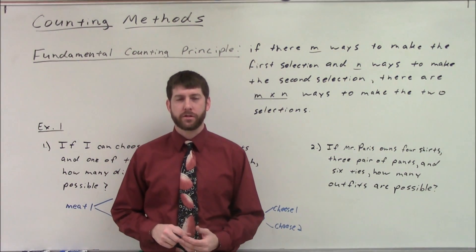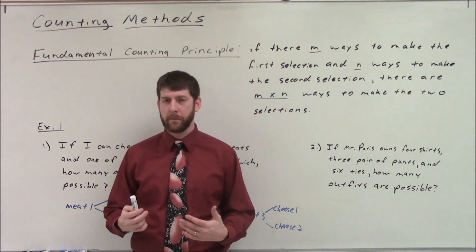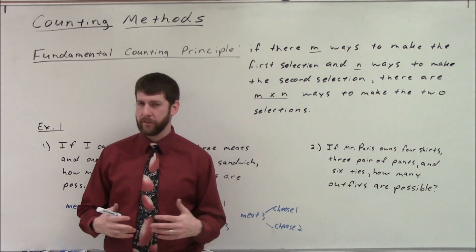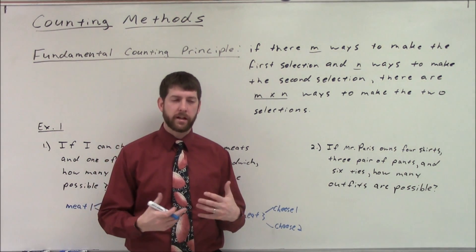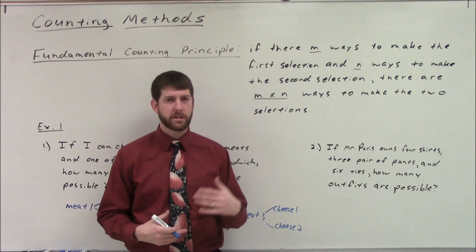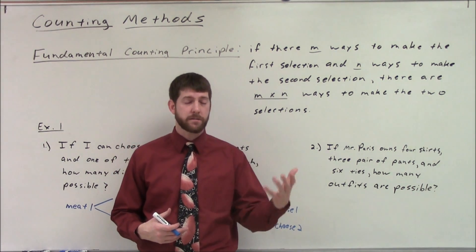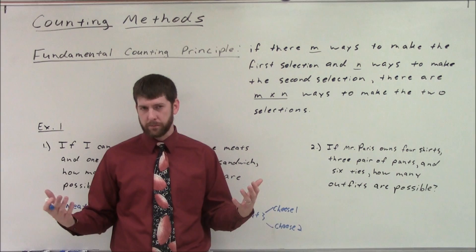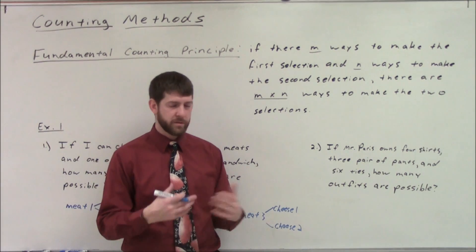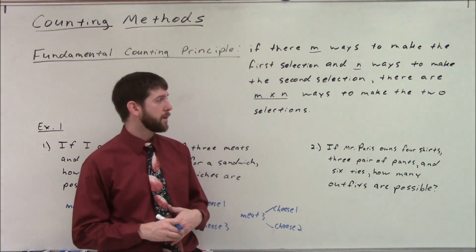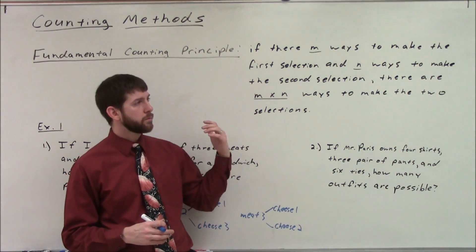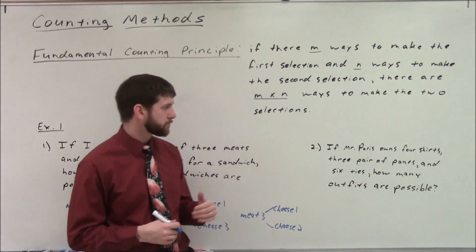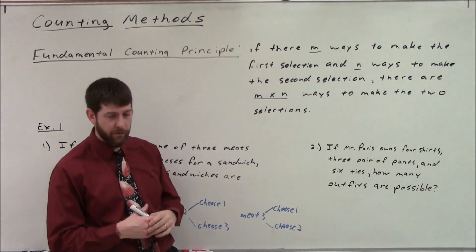Good morning guys, today we're going to start our unit on probability. The first thing we need to understand about probability is how to count things, because in general probability is the number of successful outcomes divided by the number of possible outcomes — successful or not. So we first need to know how to count up all those possible outcomes, and that's what we're going to focus on today with these counting methods.